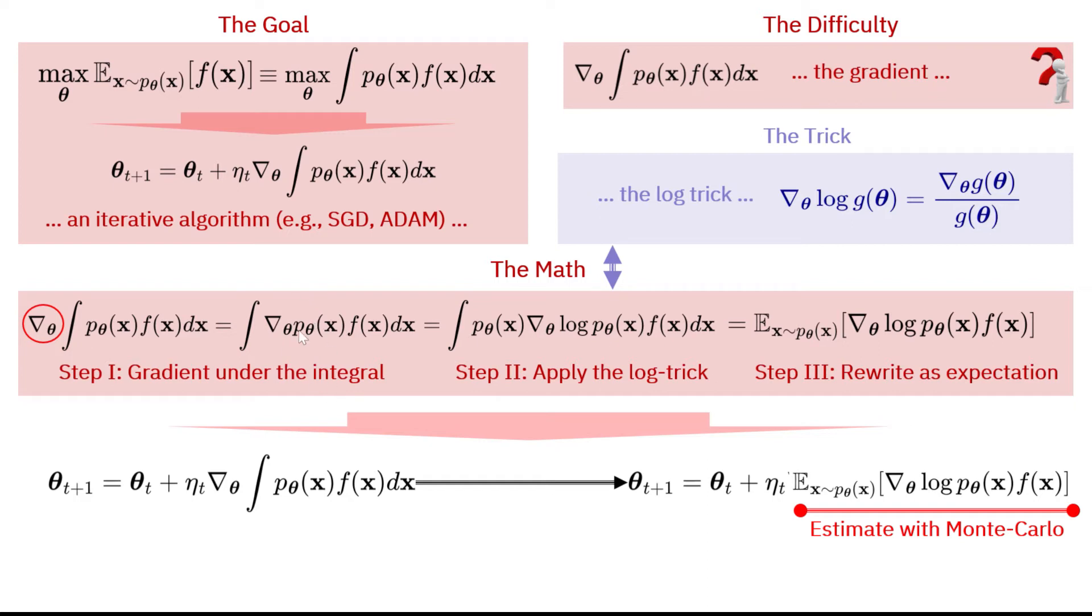And now, I want to do a gradient of p theta of x. So, this is like a function of theta, right? Because my variable is theta, so I could call this function g, right? So, I will have a gradient of g of theta, which I now could use this trick to execute. So, if I cross-multiply here, I could see that the gradient of g of theta is the gradient of log of g of theta multiplied by g of theta. So, given that our g of theta is p theta of x, which is a function of theta, our optimization variable, then I could write that this will become an integral of p theta of x times the gradient of log of p theta of x f of x.